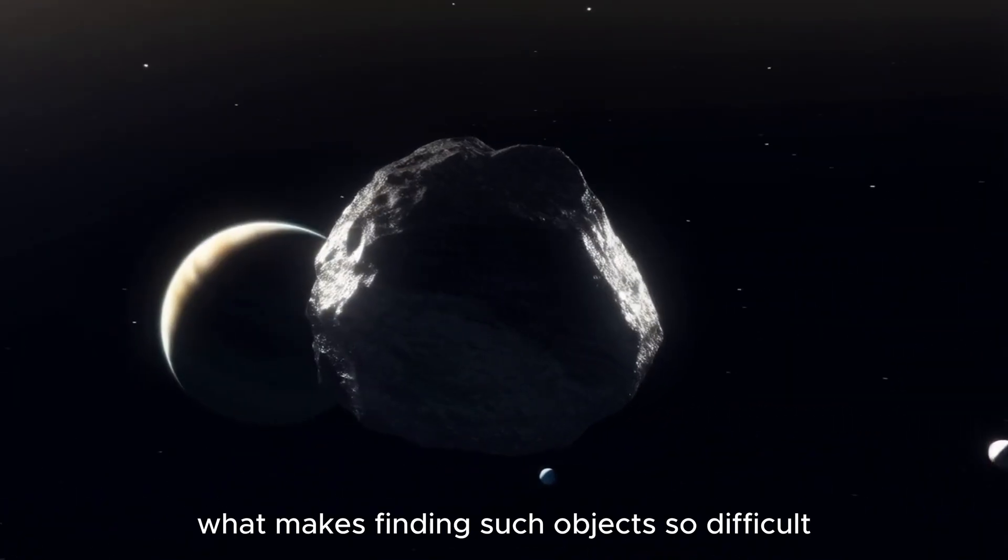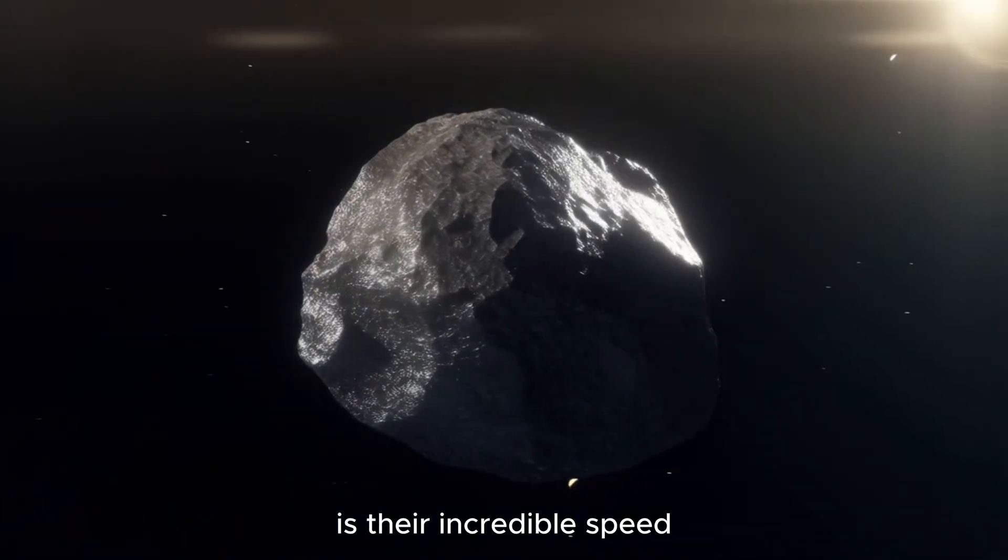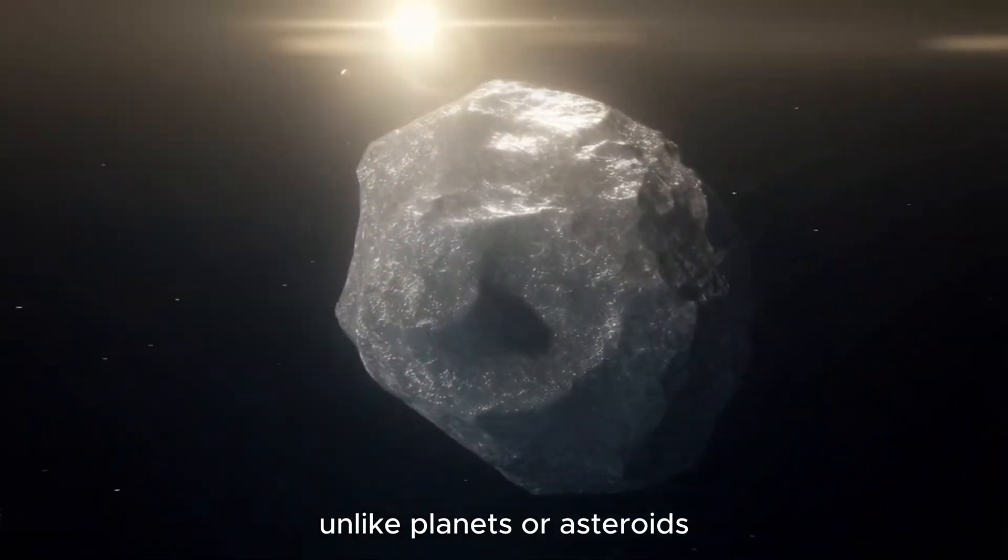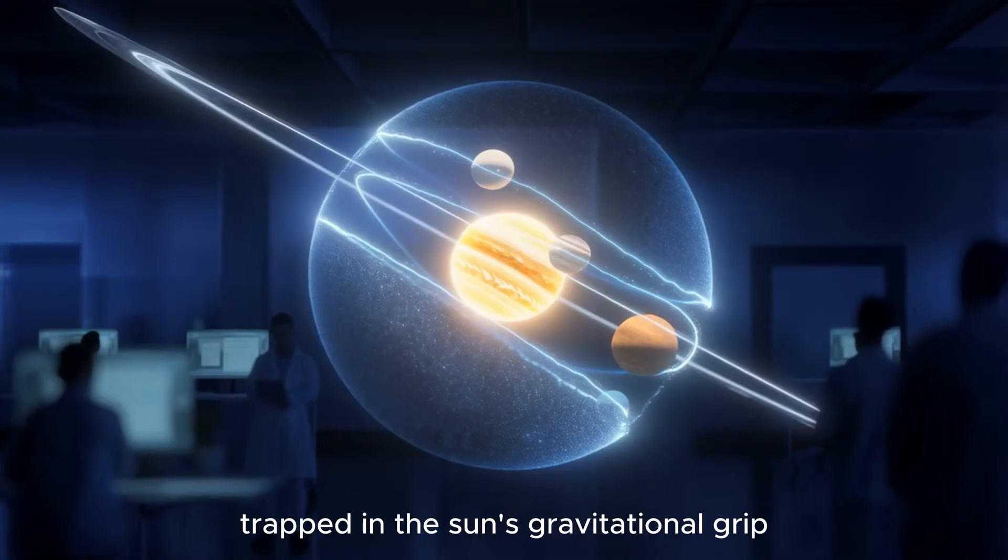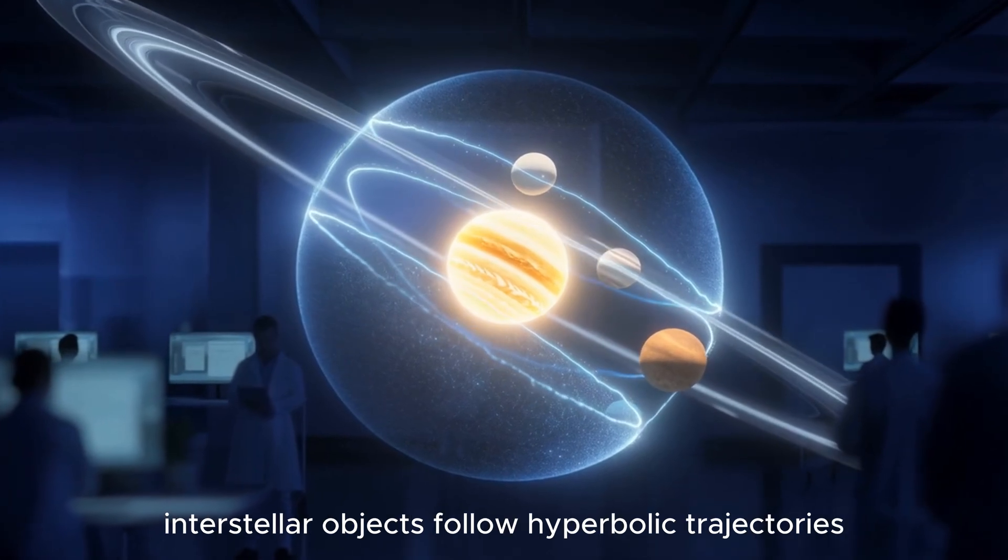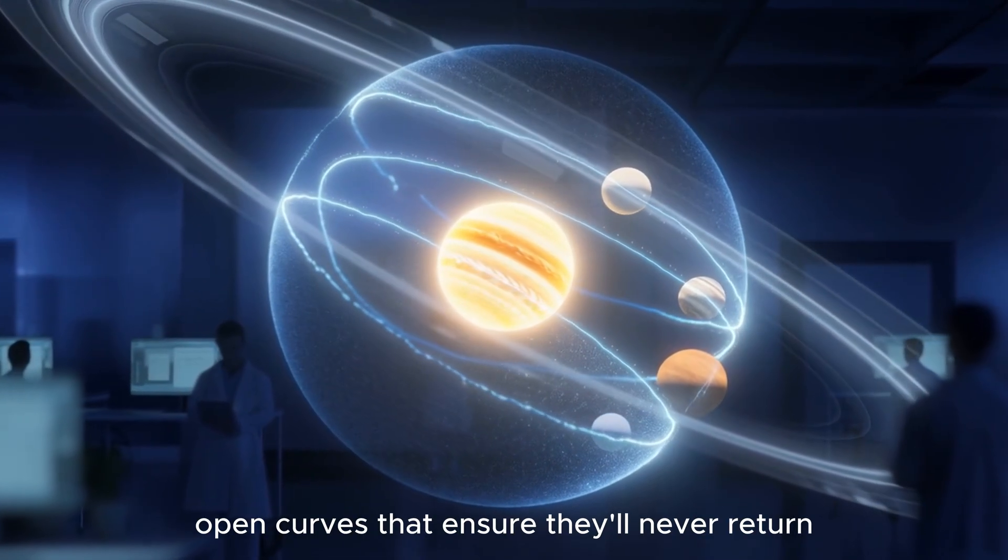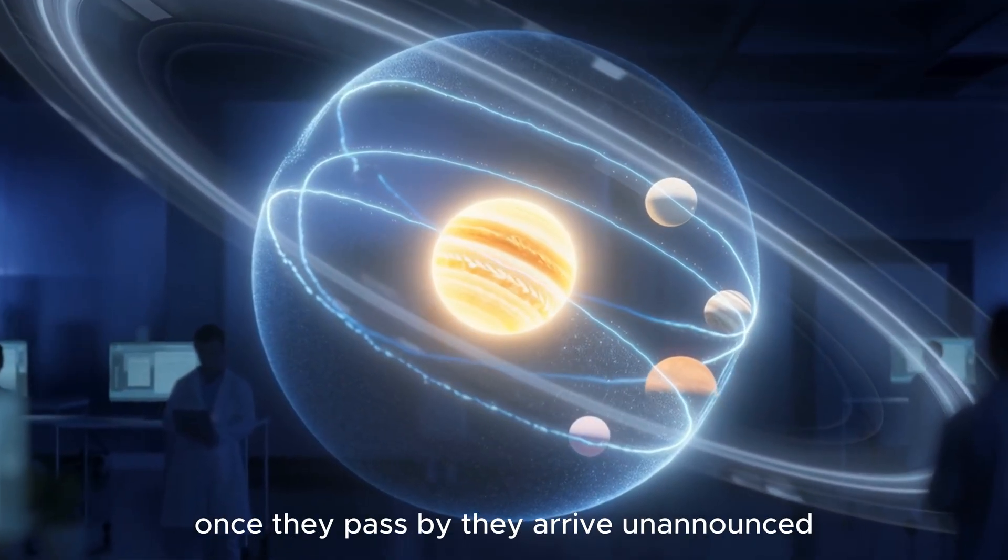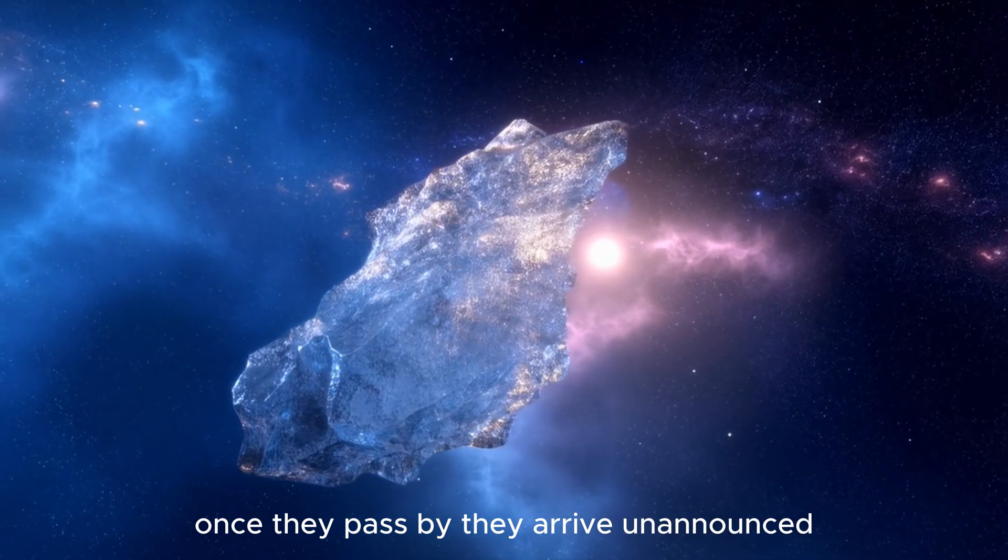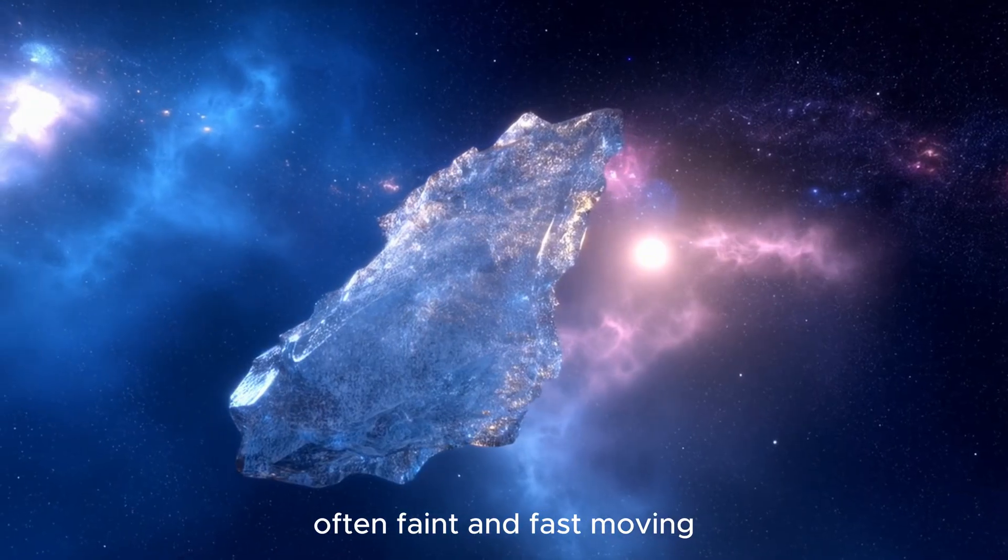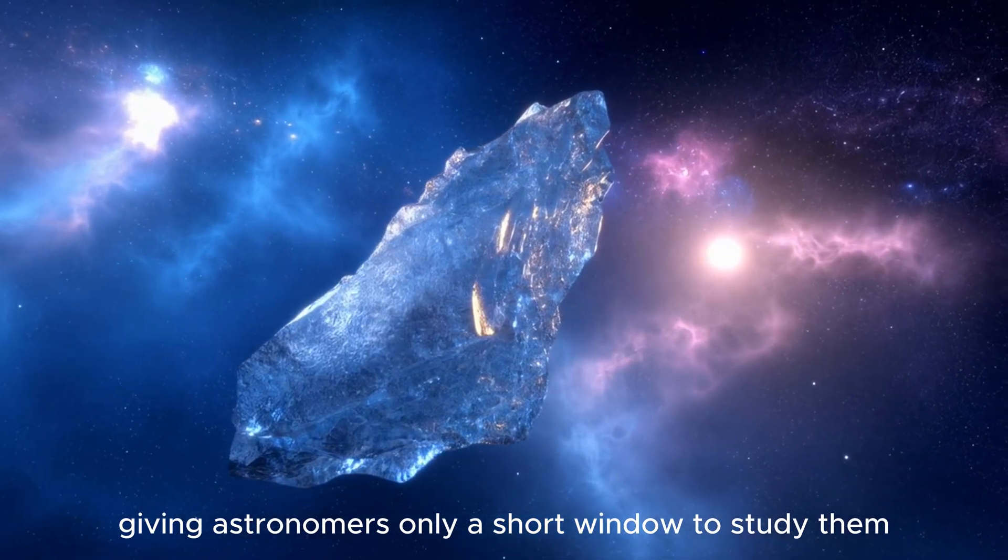What makes finding such objects so difficult is their incredible speed. Unlike planets or asteroids trapped in the sun's gravitational grip, interstellar objects follow hyperbolic trajectories, open curves that ensure they'll never return once they pass by. They arrive unannounced, often faint and fast-moving.